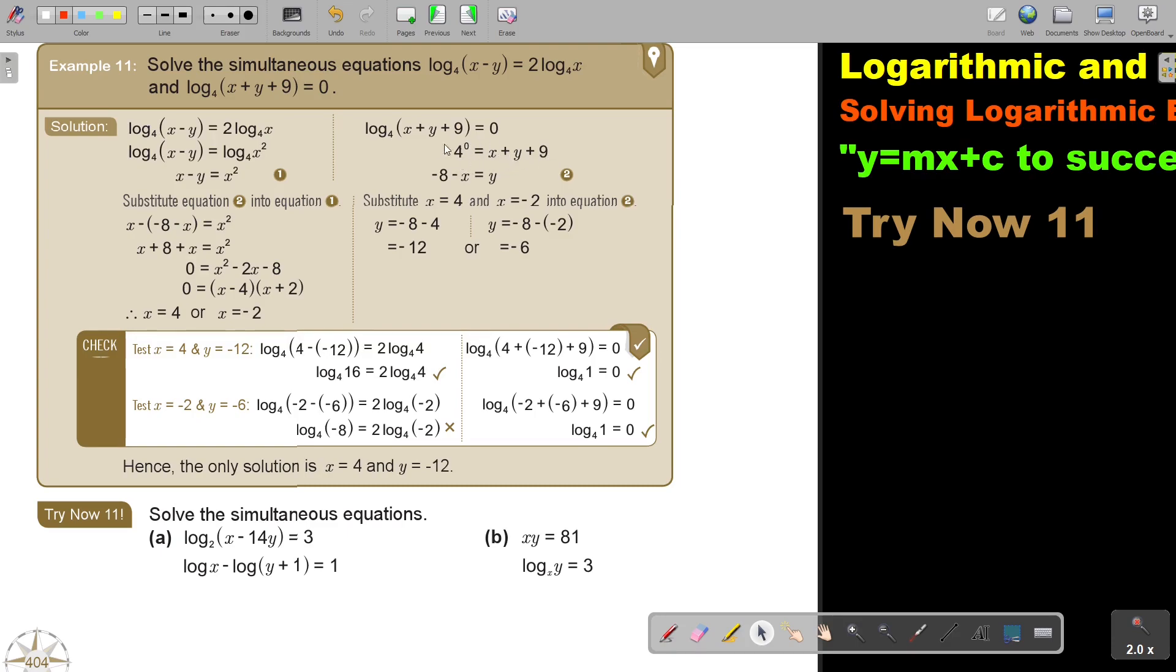I took it over. So 1 minus 9, so it's negative 8 minus x equals y. So this is a linear equation and this is a quadratic equation. So you cannot solve it by using elimination. You can only use substitution.